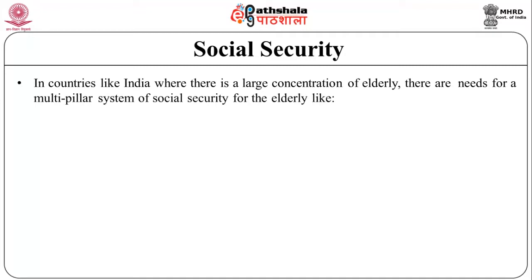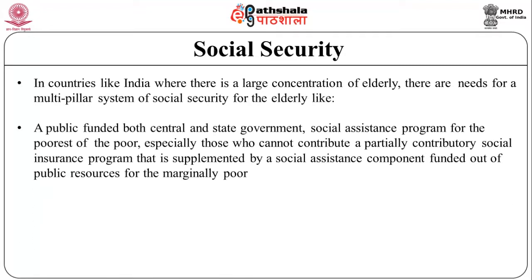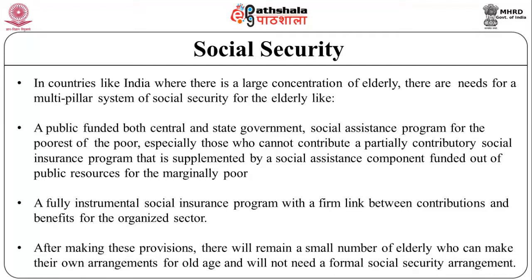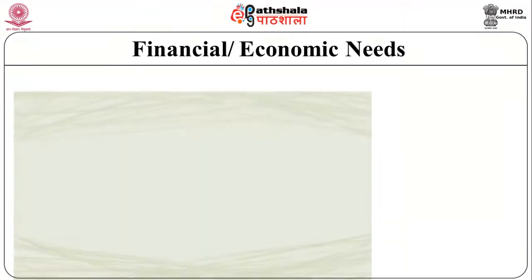In countries like India, with a large concentration of elderly, a multi-pillar system of social security is needed, including: publicly funded central and state government social assistance programs for the poorest of the poor; a partial contributory social insurance program supplemented by social assistance for the marginally poor; and a fully contributory social insurance program with a firm link between contributions and benefits for the organized sector. A small number of elderly will be able to make their own arrangements.